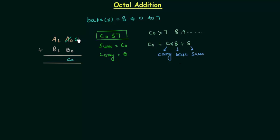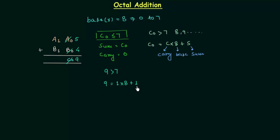Let's say a0 is 5 and b0 is 4. 5 plus 4 is 9, so c0 is 9. Now c0 is 9, and 9 is greater than 7, so 9 is not an octal number and we have to break it: 1 multiplied by 8 plus 1. Here 8 is the base, 1 is the carry, and this 1 is the sum. So sum is 1 and carry is also 1.